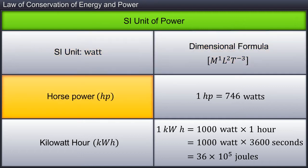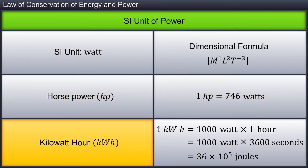Power can also be expressed in horsepower, denoted as HP, and one horsepower is equal to 746 watts. The commercial unit of electrical energy is kilowatt-hour, denoted as kWh. 1 kilowatt-hour equals 1000 watts × 1 hour = 1000 watts × 3600 seconds = 3.6 × 10⁶ joules.